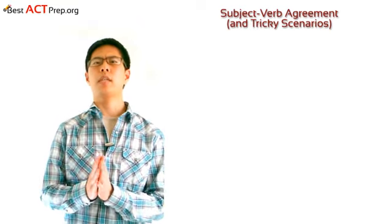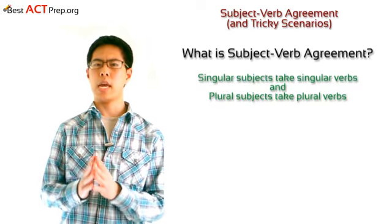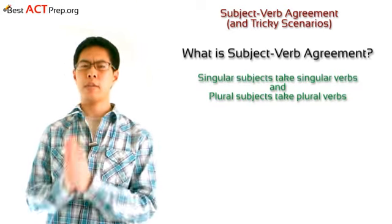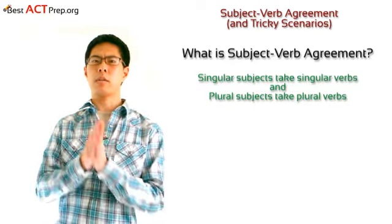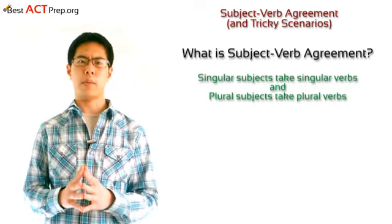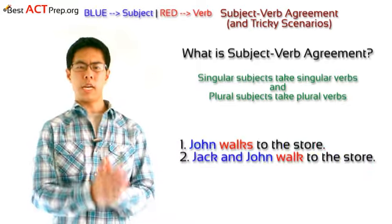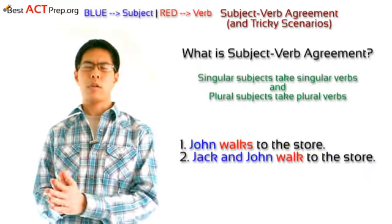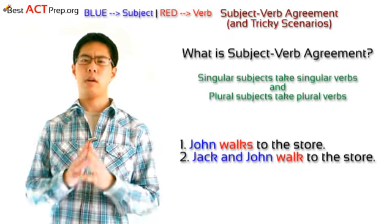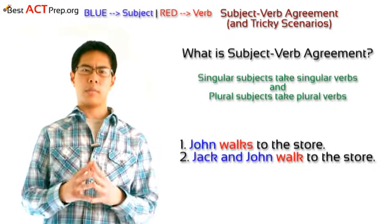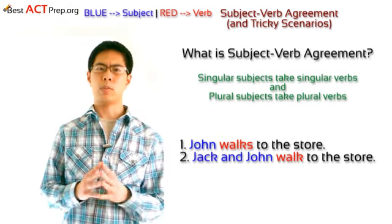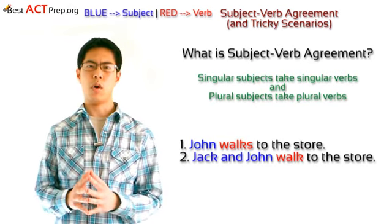So first, what is subject-verb agreement? In short, subject-verb agreement is where singular subjects take singular verbs and plural subjects take plural verbs. Here are two very simple examples. Number one: John walks to the store. John is a singular subject, so we need to match it with the singular verb 'walks.' Number two: Jack and John walk to the store. Jack and John is a plural subject, so we need to match it with the plural verb 'walk.'